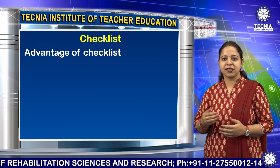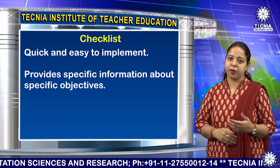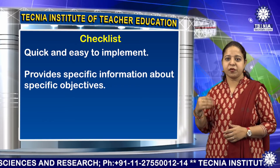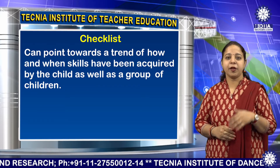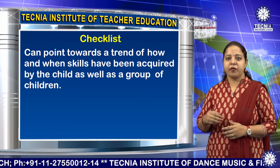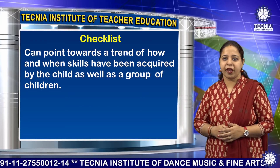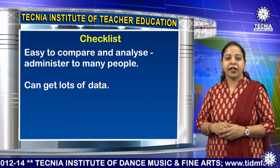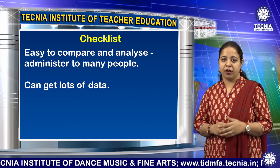Now we will discuss some advantages of checklist. It is quick and easy to implement. It provides specific information about specific objectives. It can point towards a trend of how and when skills have been acquired by the child as well as a group of children. It is easy to compare, analyze, and administer to many people.